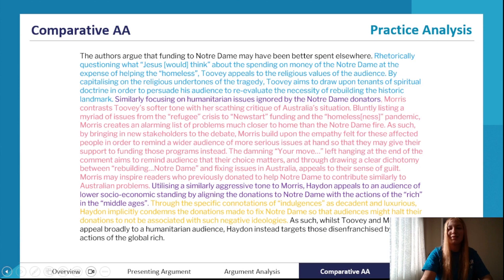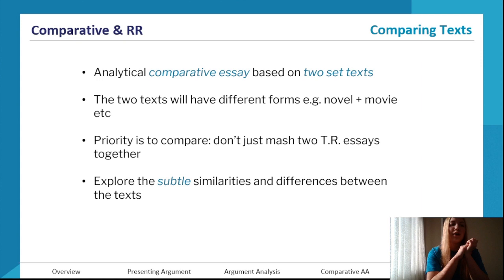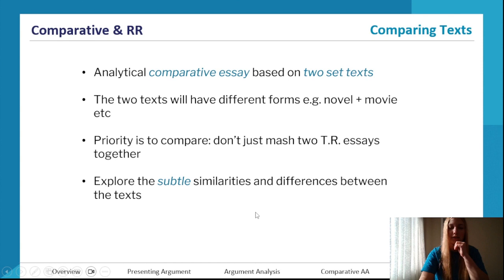There's a structure you can follow where you discuss one text for a while, bring in a comparative link, discuss the other text, mention more comparative links, and then contrast views and values at the end of your linking sentence. The benefit of having different forms is that a lot of differences will arise naturally from structural features. The marks, however, come from subtle similarities and differences — not obvious things. That's what we're aiming for.